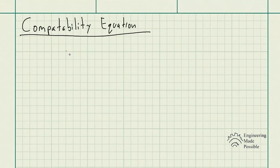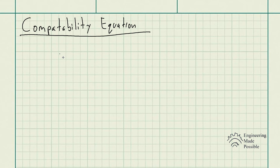Previously we used the compatibility equation, also called the constraint equation, for a rod constrained between two walls to solve for reactionary forces. The compatibility equation also has other useful applications in problems dealing with structures made of composite materials. Let's do an example.